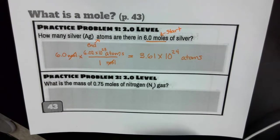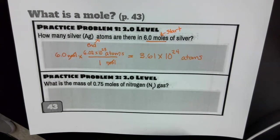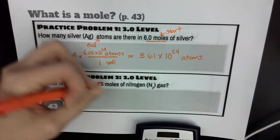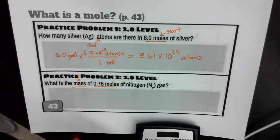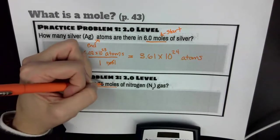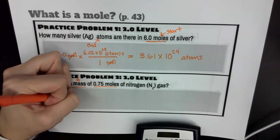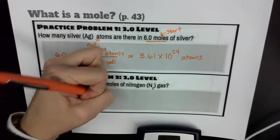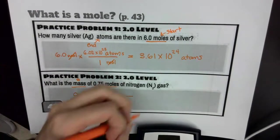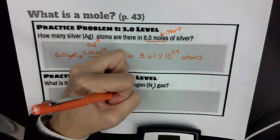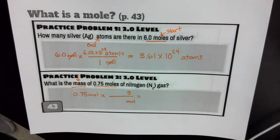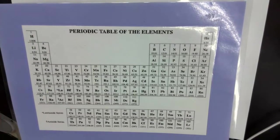Now for the next problem: what is the mass of 0.75 moles of nitrogen gas? I want to know mass, which is going to be grams, and I have moles to begin with. So I'm going to take my 0.75 moles, and I want moles to go away, so I'll go times in a line — moles go on the bottom and I'm trying to get to grams. For this, I'm going to have to look at my periodic table, which tells me the mass of one mole of everything.